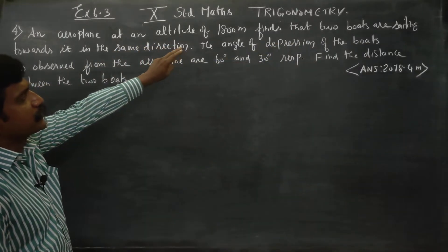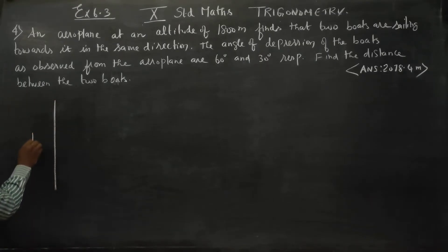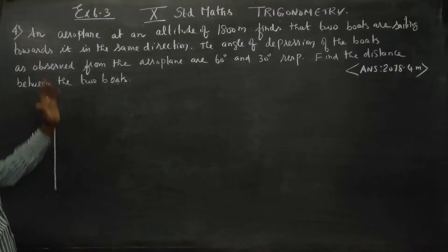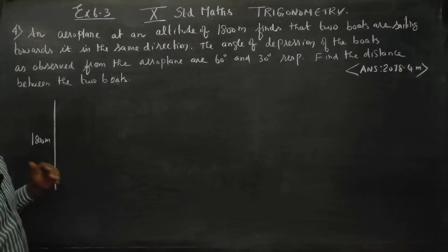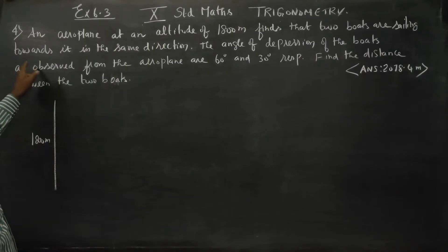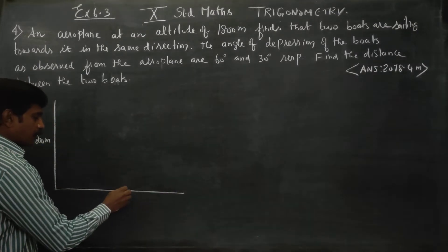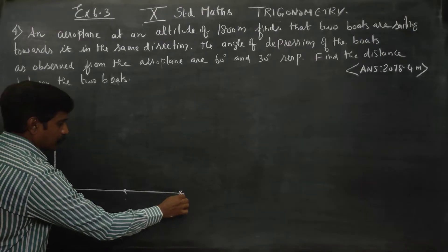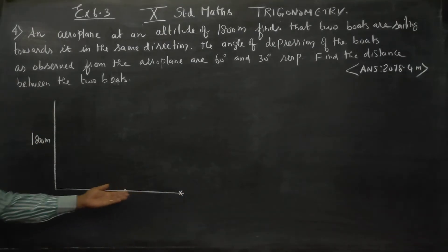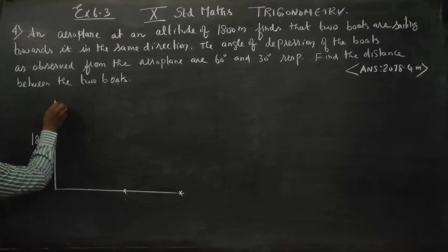An aeroplane at an altitude of 1800 meters finds that two boats are sailing towards it in the same direction. The angles of depression of the boats as observed from the aeroplane are 60 degrees and 30 degrees.